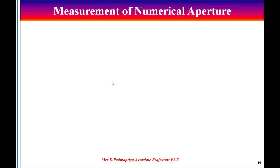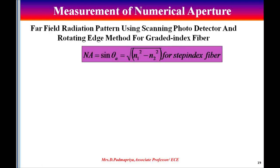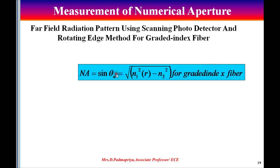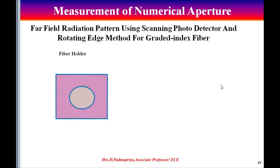Measurement of numerical aperture: numerical aperture is an important optical fiber parameter which determines the light gathering capability of an optical fiber. This can be used for determining the normalized frequency and the number of modes propagating within the fiber. The numerical aperture is given by: NA = sin(θ_a) = √(n1² - n2²) for step index fiber, and NA = sin(θ_a) = √(n1²(r) - n2²) for graded index fiber. There are two methods for measurement of numerical aperture: the far field radiation pattern using a scanning photo detector, and the rotating edge method for graded index fiber.